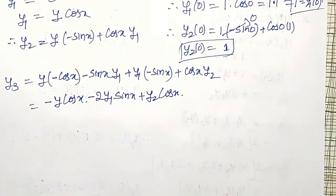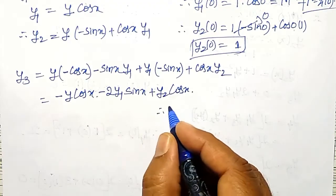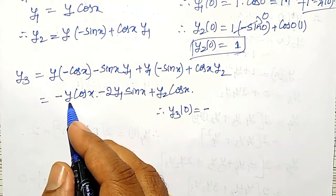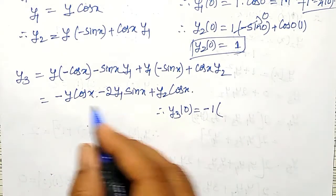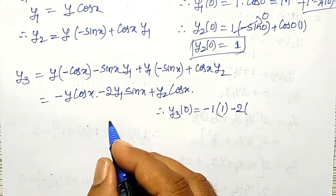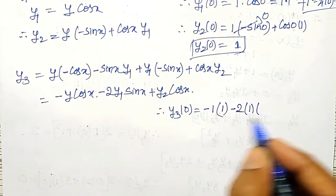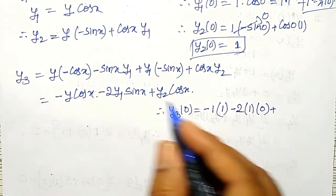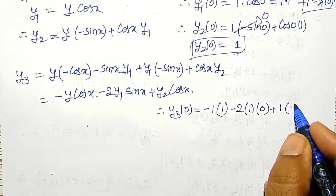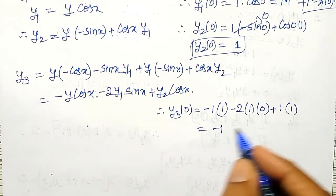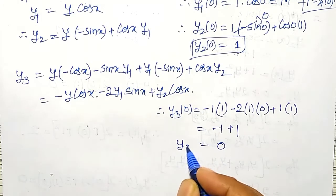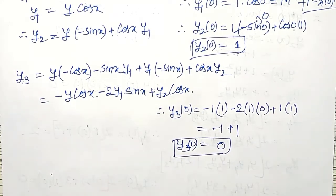The y3 value at x equal to 0: y3(0) equals minus y(0) into cos 0 minus 2 into y1(0) into sin 0 plus y2(0) into cos 0. Substituting: minus 1 into 1 minus 0 plus 1 into 1, which becomes minus 1 plus 1. Therefore y3(0) is equal to 0.